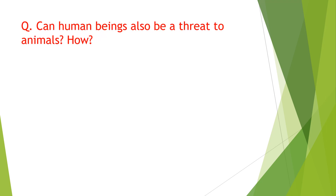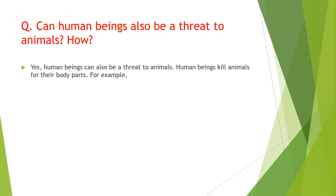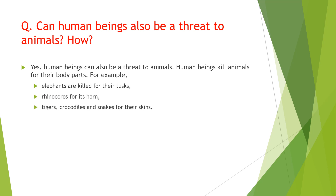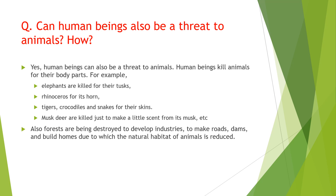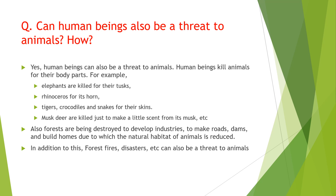Can human beings also be a threat to animals? Yes, human beings can also be a threat to animals because they kill animals for their body parts. For example, elephants are killed for their tusks, rhinoceros for its horn, tigers, crocodiles and snakes for their skins, and musk deer are killed to make scent from its musk. Also, forests are being cleared to develop industries, make roads, dams and build homes, due to which the natural habitat of animals is reduced.